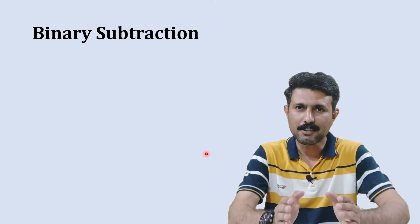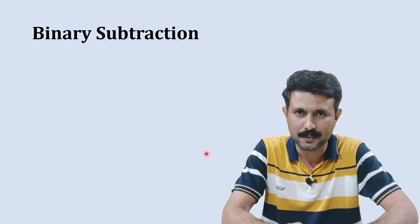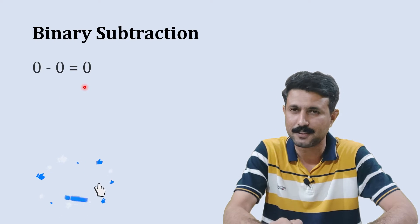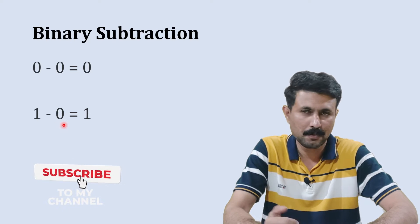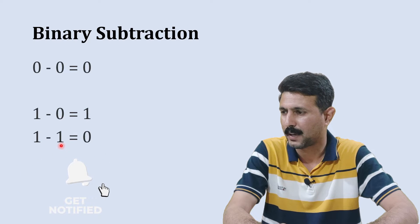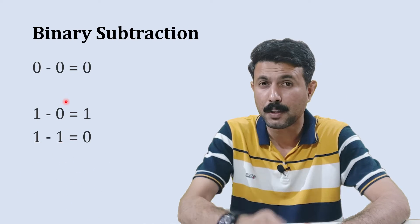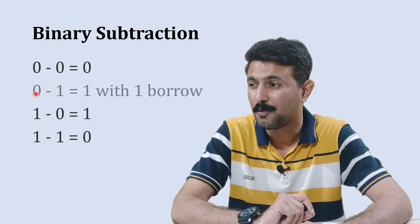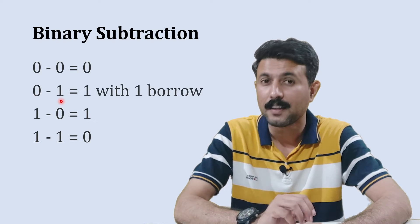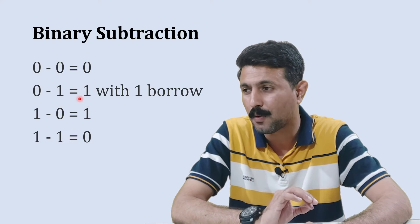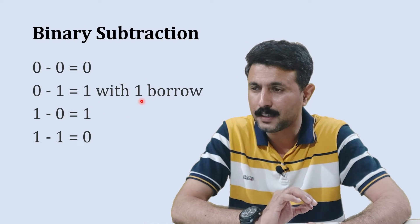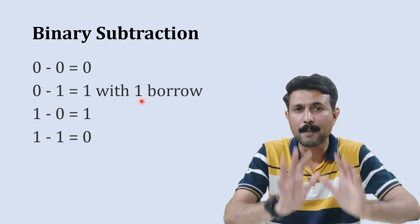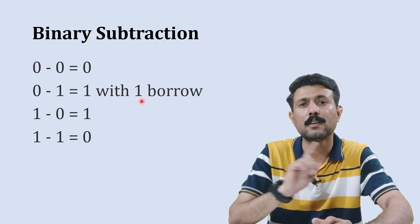Now it's time for binary subtraction. When you do 0 minus 0 it gives 0; 1 minus 0 gives 1; 1 minus 1 gives 0. But the fourth and really important case: when you do 0 minus 1, the result is 1 and 1 will be borrowed.